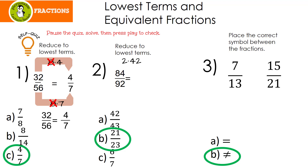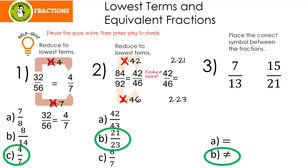Let's look at number 2. I happen to know that 2 times 42 is 84, and 2 times 46 is 92. I picked 2 because they're both even numbers. So I ended up with 42 over 46. But I realized that these are both even numbers also, so I need to reduce some more. 2 times 21 is 42, and 2 times 23 is 46. When I cancel out my common factors, I end up with 21 over 23. Some of you may have reduced by 4 right away — it doesn't matter. We'll still get 84 over 92 equals 21 over 23.